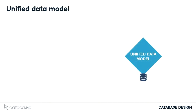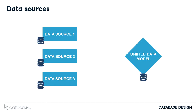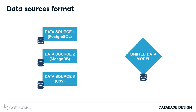There are a few things to consider when integrating data. What is your final goal? Your unified data model could be used to create dashboards like graphs of daily sales, or data products such as a recommendation engine. The final data model needs to be fast enough for your use case. Which format is each data source stored in? For example, it could be PostgreSQL, MongoDB, or a CSV.